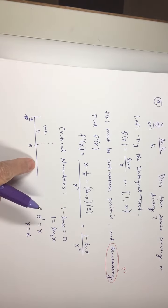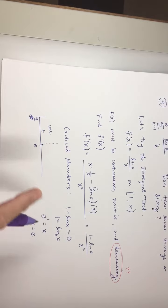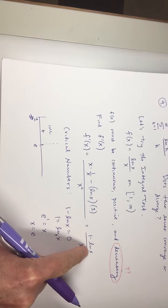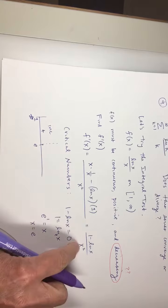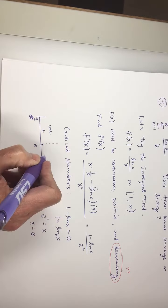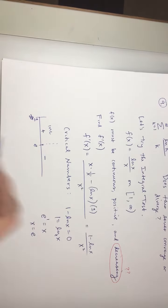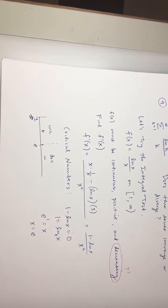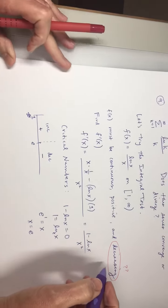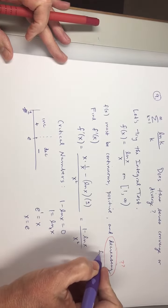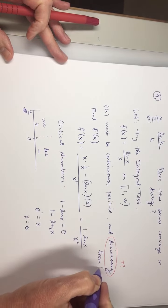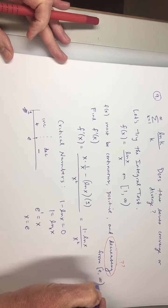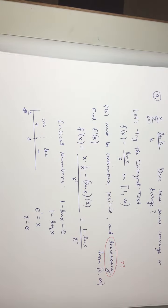Pick something bigger than e. How about 10? 1 minus the natural log of 10. That's negative. And 10 squared is positive. Negative over a positive is negative. Decreasing. This function is decreasing from e to infinity. So it's decreasing eventually. So that's good enough.